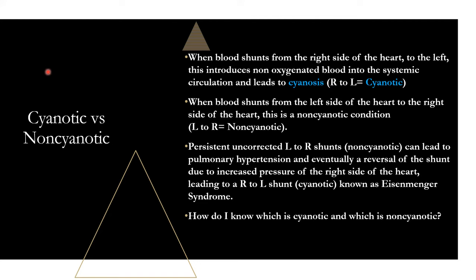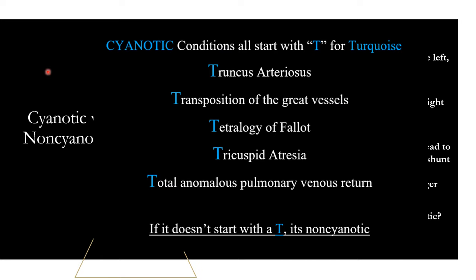To remember which conditions are cyanotic: anything that starts with a T is going to be cyanotic. Think turquoise — a bluish color — and when you see any condition starting with T, think cyanosis. So truncus arteriosus, transposition of the great vessels, and tetralogy of Fallot are all cyanotic. If it starts with a T, it's cyanotic. If it does not start with a T, it's non-cyanotic. That's the easy way to remember it.